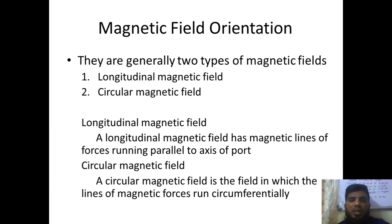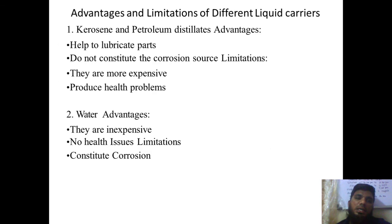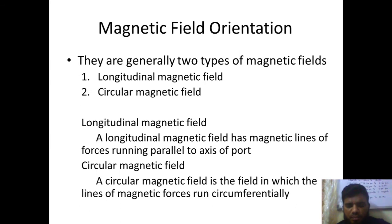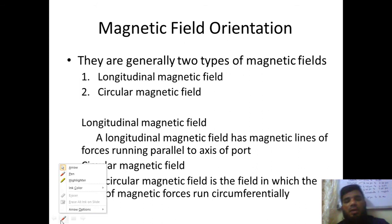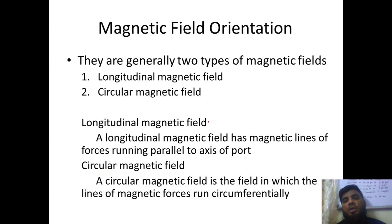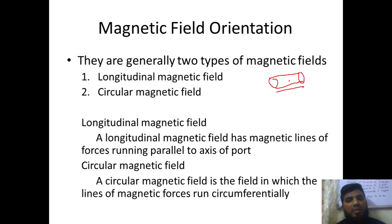Next is magnetic field orientation. When you are applying the magnetization to a surface, the orientation of the magnetic field will be different — one may be circular or it may be longitudinal. For example, if this is a cylinder on which you are conducting the inspection, and you want the magnetic field to pass through in a horizontal direction to check linear cracks, you will bring a permanent magnet near to this surface.